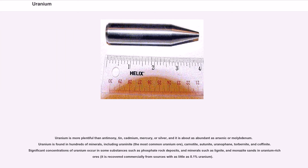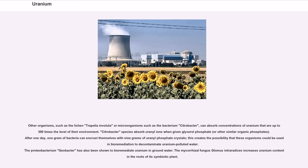Uranium is more plentiful than antimony, tin, cadmium, mercury, or silver, and it is about as abundant as arsenic or molybdenum. Uranium is found in hundreds of minerals, including uraninite, the most common uranium ore, carnotite, autunite, uranophane, torbernite, and coffinite. Significant concentrations of uranium occur in some substances such as phosphate rock deposits and minerals such as lignite and monazite sands in uranium-rich ores; it is recovered commercially from sources with as little as 0.1% uranium. Other organisms, such as the lichen Trapelia involuta or microorganisms such as the bacterium Citrobacter, can absorb concentrations of uranium that are up to 300 times the level of their environment.